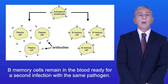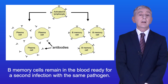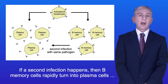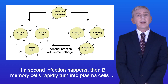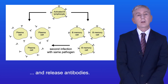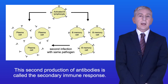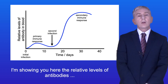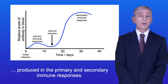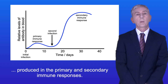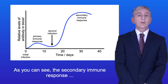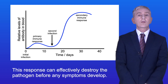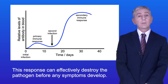B memory cells remain in the blood, ready for a second infection with the same pathogen. If a second infection happens, then B memory cells rapidly turn into plasma cells and release antibodies. This second production of antibodies is called the secondary immune response. The secondary immune response produces a much higher level of antibodies, and this response can effectively destroy the pathogen before any symptoms develop.